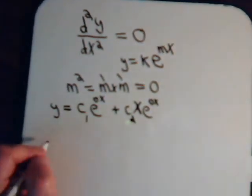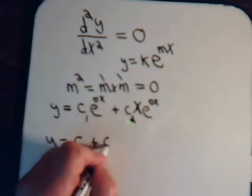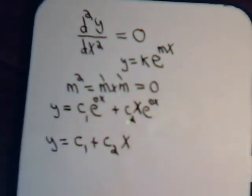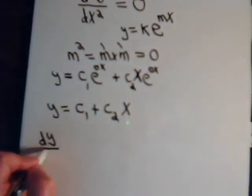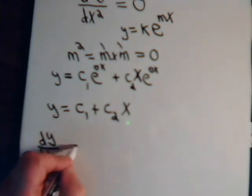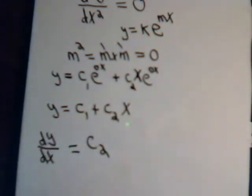Now we would have, then, y equals c1 plus c2 times x. And if we take the derivative of it, dy/dx equals c2, take the derivative of that, and of course it's going to be zero.